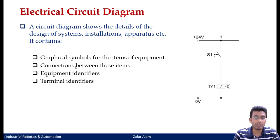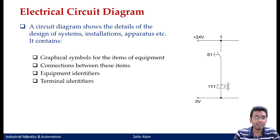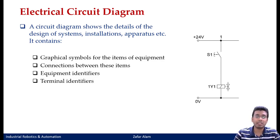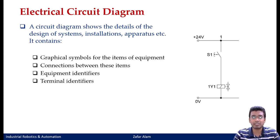A circuit diagram also shows the connection between these items. You can see this solenoid valve is directly connected to this push button switch — whenever you engage this push button, it will lead to energization of this solenoid valve. Then you have your equipment identifiers — all these letters and numerals. For example, S1, S2, and somewhere in this circuit you will see the capital letter B, then Y and H. All those letters denote different types of symbolic representation of certain equipment.